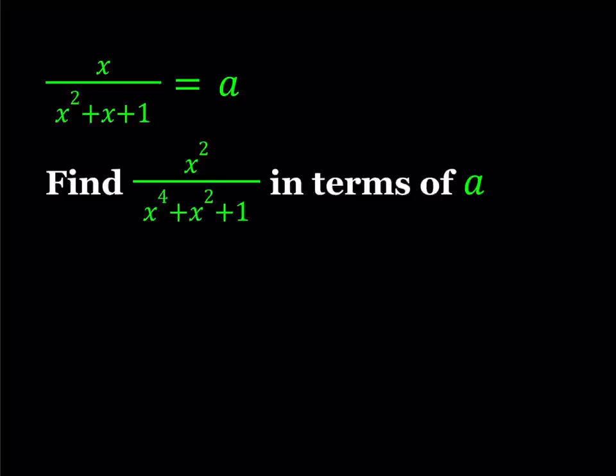Hello everyone. In this video, we're going to be evaluating an algebraic expression in terms of another one. So we're given that x divided by x squared plus x plus 1 equals a, a being a real number or a given number. And we're supposed to find x squared divided by x to the fourth plus x squared plus 1, and the answer needs to be in terms of a, which is our original expression.